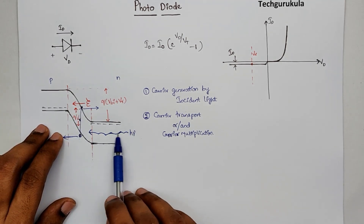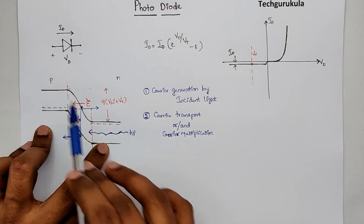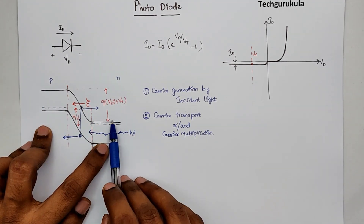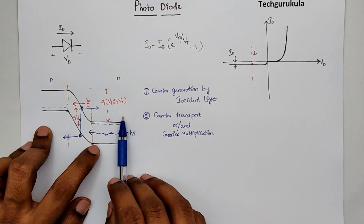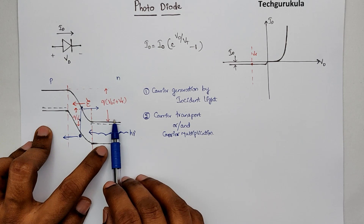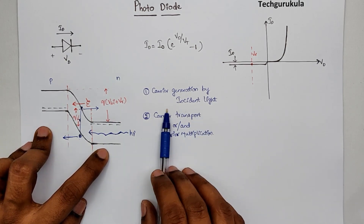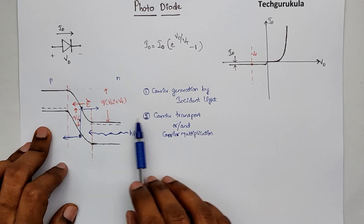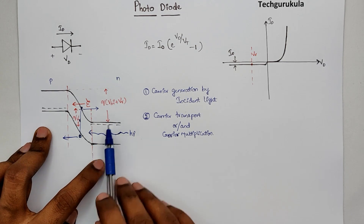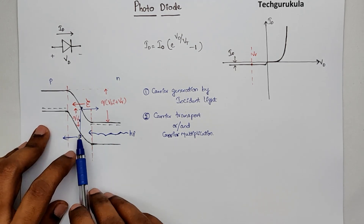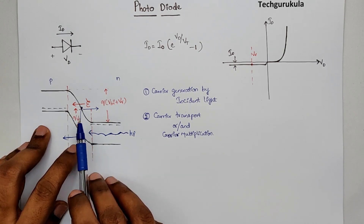If a photon creates electron-hole pairs in the neutral regions (N or P), those electrons and holes have a finite lifetime but there is no electric field to separate them, so they would recombine. There would be no carrier transport in the neutral regions even if electron-hole pairs are created there. That's why we are focusing only on the depletion region — that's what actually matters.